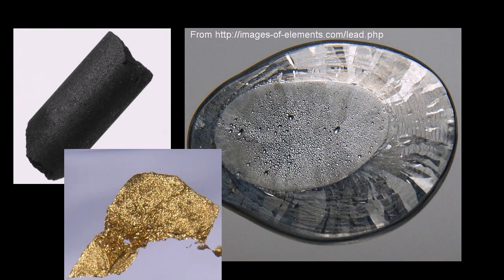We humans have known for thousands of years, just looking at our environment around us, that there are different substances. These different substances tend to have different properties — one might reflect light in a certain way, or not reflect light, or be a certain color, or at a certain temperature be liquid, or a gas, or be a solid. But we also start to observe how they react with each other in certain circumstances.